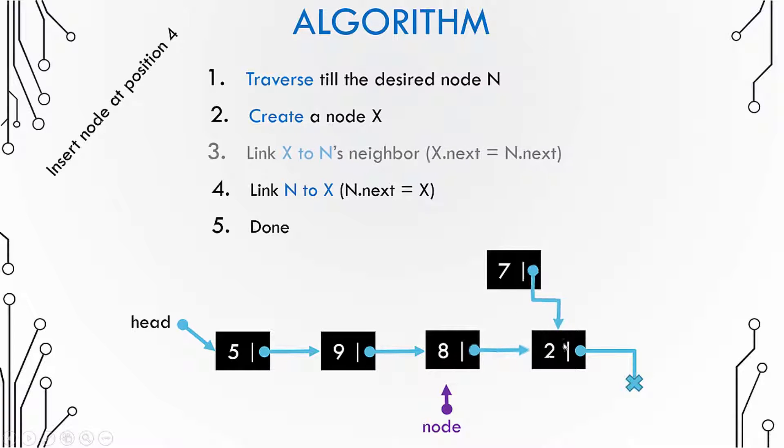Now 7 is connected to node 2. Now next we need to point 8 to 7 thereby connecting 8 and 7. So you now have inserted the node 7 at position number 4 and you have also ensured that the linked list is continuous. You have not broken the linked list.